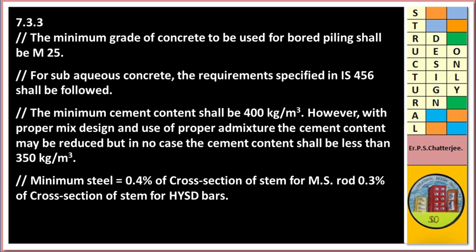Minimum grade of concrete for bored piling shall be M25. For submerged concrete, requirements specified in IS 456 shall be followed. Minimum cement content shall be 400 kg/m³; however, with proper mix design and admixtures, cement content may be reduced, but in no case shall it be less than 350 kg/m³. Minimum steel percentage: 0.4% of cross-sectional area for MS rod and 3% for HYSD bars.